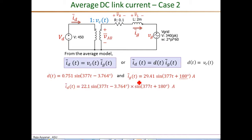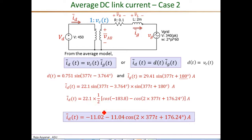Taking that product, we get the average ID in a form where we can clearly see the DC component and the twice-line-frequency component. The DC component, as expected, is negative because the power flow is now into the DC source, so the average ID should be negative. We also have this 2f term, and we will look at the magnitudes separately in the next slide.